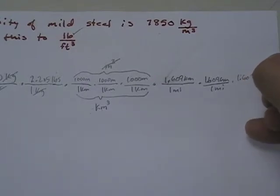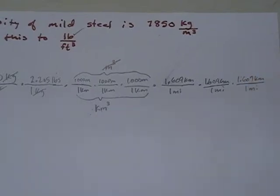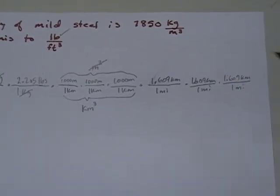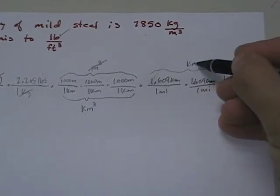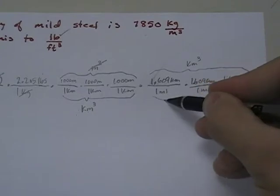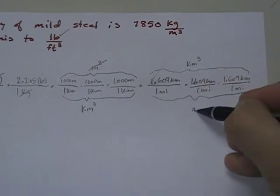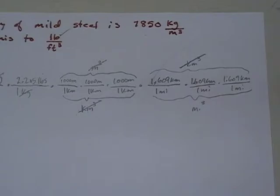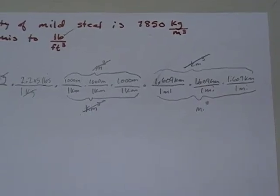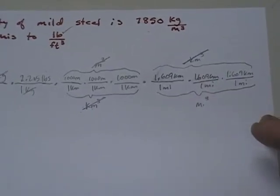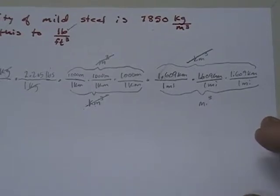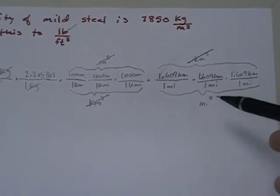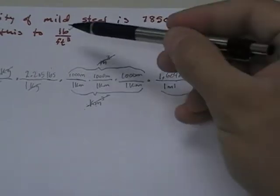1.609 kilometers, one mile. Now what happens? We get kilometers cubed and we get miles cubed. And kilometers cubed cancels out. So right now I have pounds per cubic mile. I don't think that's a good density unit. So now what do we have to do? Now we have to turn this into something we want. Well, we want feet.